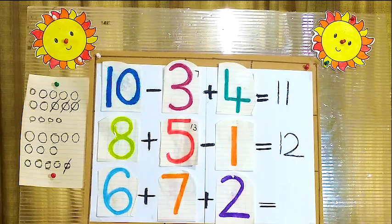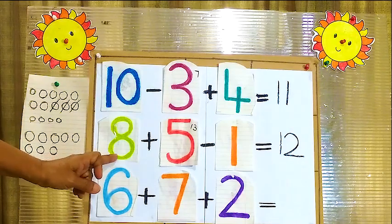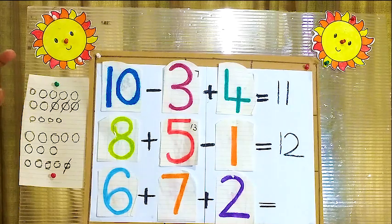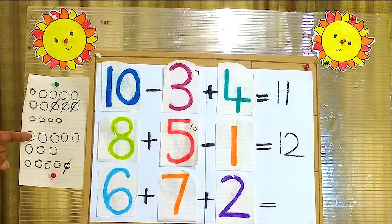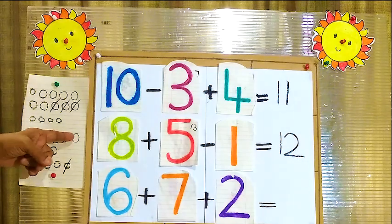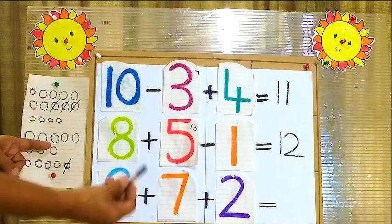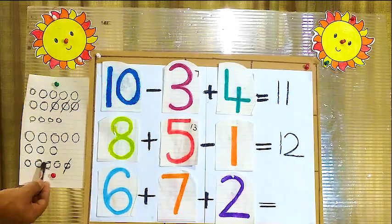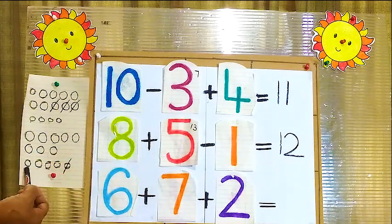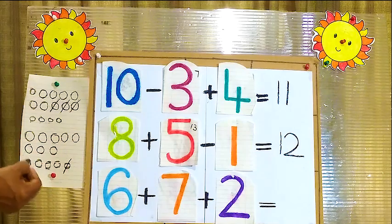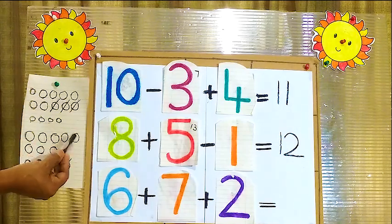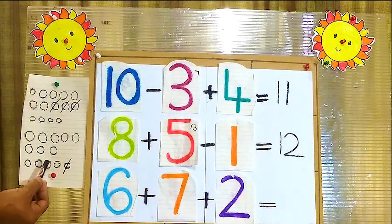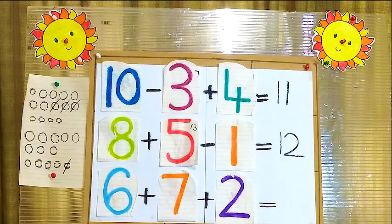Now I will do that sum again from the beginning. Here number 8 plus 5. Now here we will see 8 balls: 1, 2, 3, 4, 5, 6, 7, 8. 8 plus 5. Now here we will count all the balls together: 1, 2, 3, 4, 5, 6, 7, 8, 9, 10, 11, 12, 13. Answer is 13.